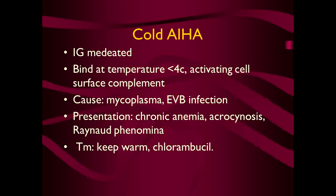The treatment of warm autoimmune hemolytic anemia is steroids, immunosuppressive agents, and splenectomy. The cold autoimmune hemolytic anemia is IgG mediated and the binding is at 4 degrees centigrade through activation of complement, meaning complement and IgG lyse the cells. The causes are mycoplasma and EBV infections. The patient presents with slowly progressive chronic anemia and may also present with acrocyanosis and Raynaud's phenomenon. Treatment involves keeping the patient warm, and chlorambucil offers some help.